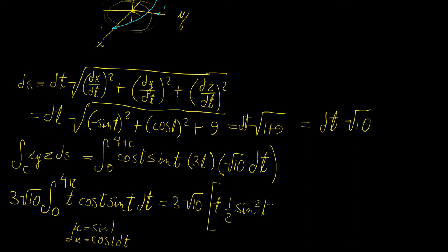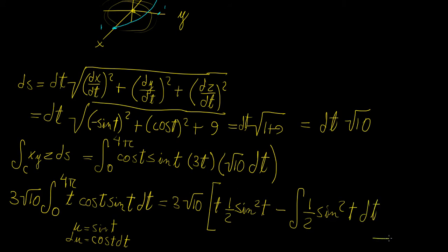If you differentiate one-half sine squared t, it goes back to sine t cosine t, confirming the substitution. Then we subtract the integral of the derivative of t — which is just 1 — times one-half sine squared t dt. So we subtract the integral of one-half sine squared t dt, all evaluated from 0 to 4π.